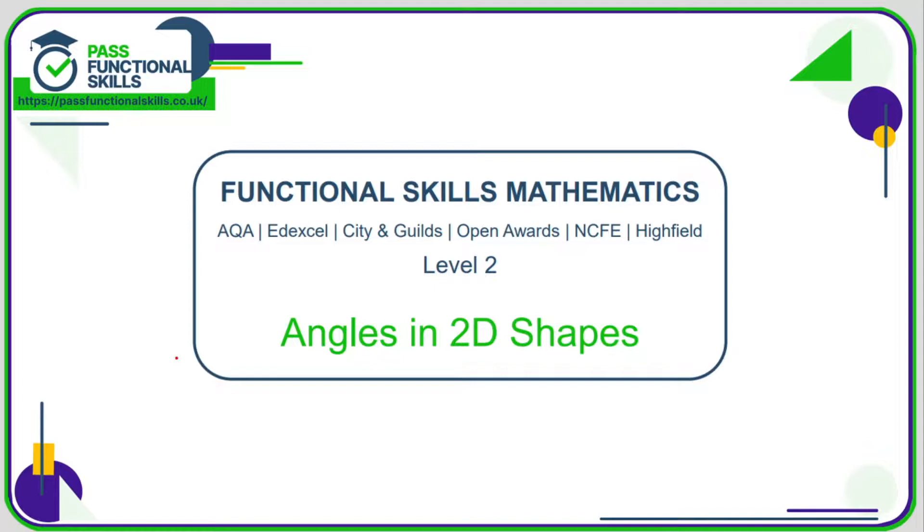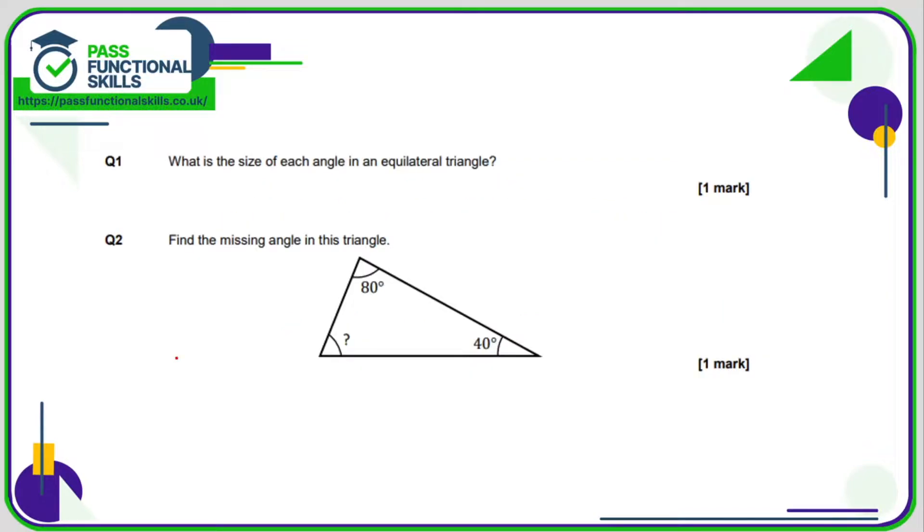Let's take a look at angles in 2D shapes. Question one is a non-calculator question: What is the size of each angle in an equilateral triangle? This is something you should know off the top of your head, which is 60 degrees. Alternatively, remember that there's 180 degrees in a triangle. If there are three angles all the same size, divide 180 by 3 to get 60.